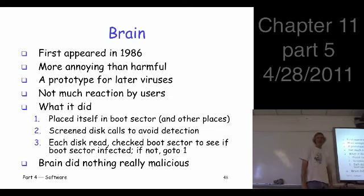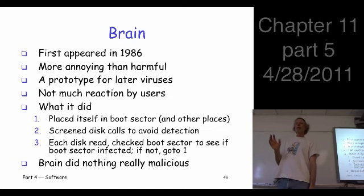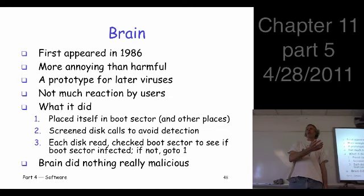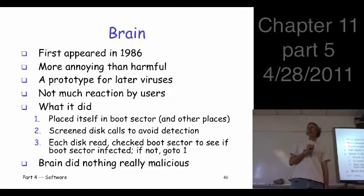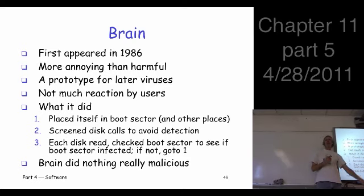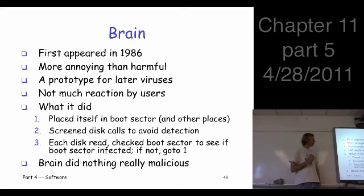So the Brain virus from 1986 — this is very early. This one really did nothing harmful. It just sort of used up system resources, so people didn't really worry too much about it. There was no Norton Antivirus in 1986, so it was actually very difficult to remove, and it's probably still out there on some machine somewhere — these things never go away. It's important because it's early and it's kind of a prototype; people built on it for later malware.